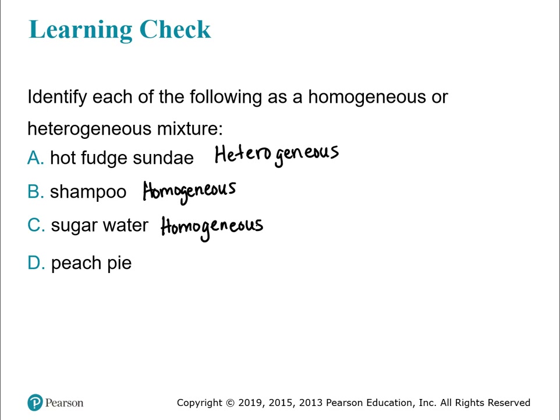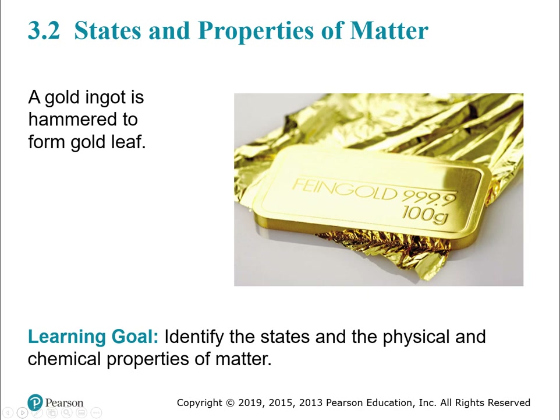Peach pie — there's the crust, there's the peaches, there's the sugary sauce. You can clearly see the different parts, so that's heterogeneous. Now we've finished up classifications of matter. Next, we're going to talk about the states and properties of matter — some of this will be review from high school or even grade school, but we'll also cover new material on physical and chemical properties.